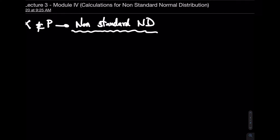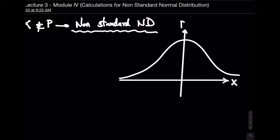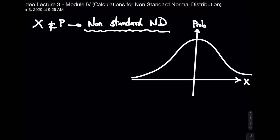Let me draw the distribution here. The horizontal axis is now the x-axis, not the z-axis, and the vertical axis is still the probability axis. The only thing that changes is now it's x instead of z, and the middle is no longer 0 — for x, the center is whatever the mean of that experiment is. So I must provide you with the mean and the standard deviation.